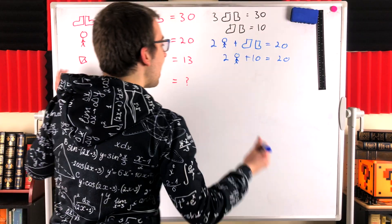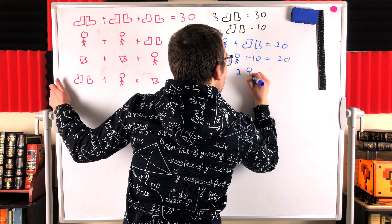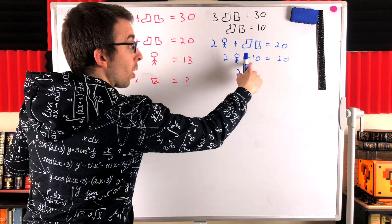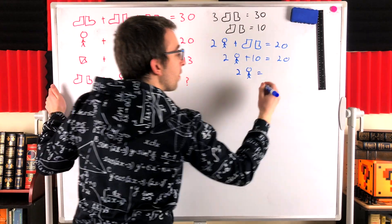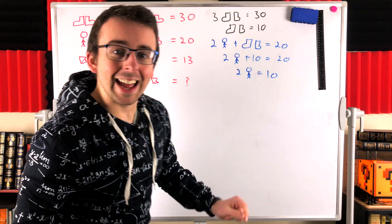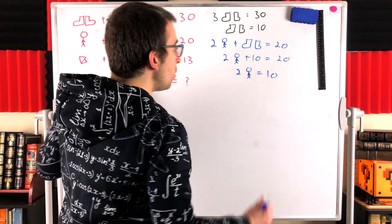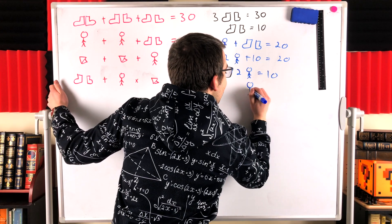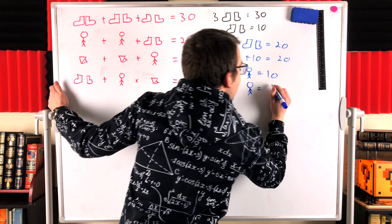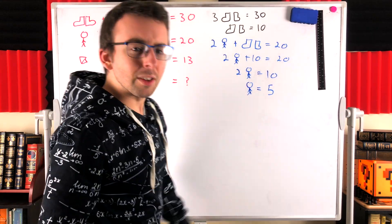Subtract 10 from both sides, so 2 faceless stick figures is equal to 10. Divide both sides of the equation by 2. We've got that faceless stick figure is equal to 10 divided by 2. Faceless stick figure is equal to 5.